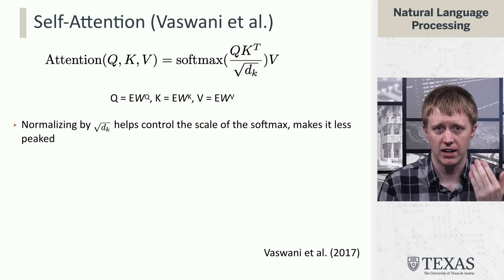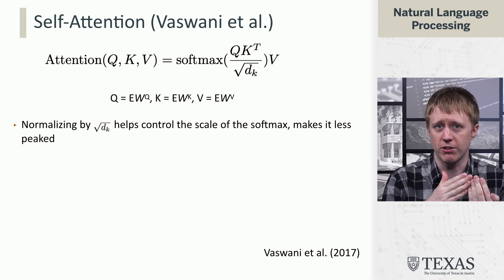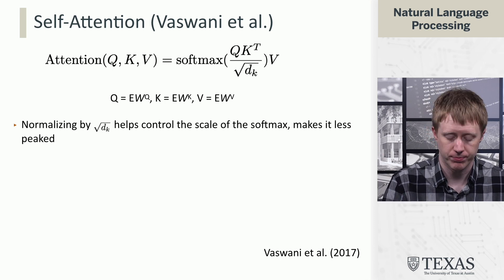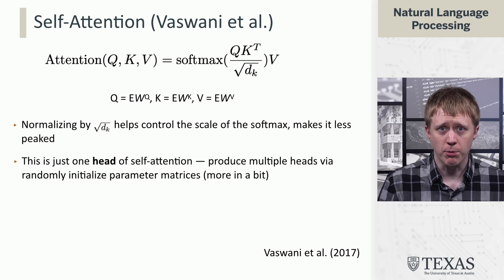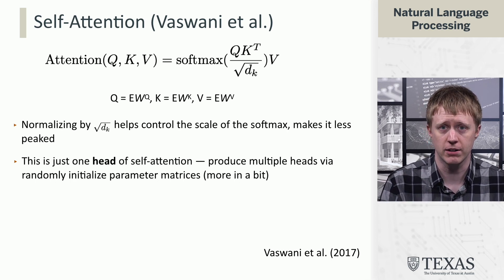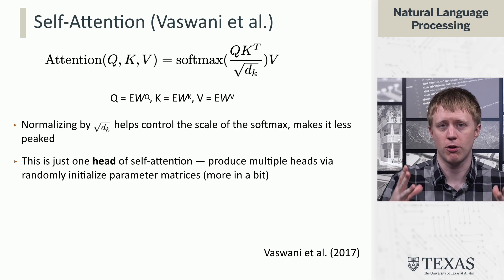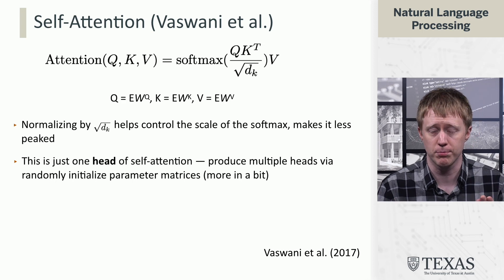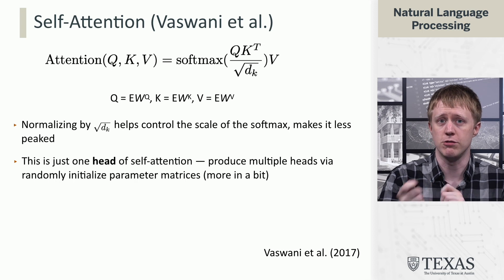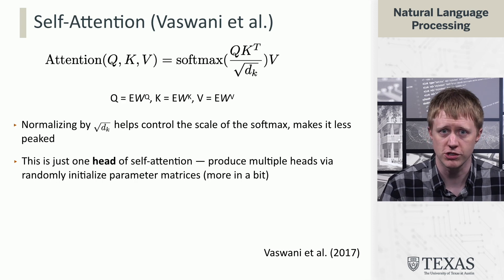Then they multiply by V here in order to get the output. They're taking their attention matrix A and multiplying that by V, so they're getting the output as a weighted combination of V. This is what we call one head of self-attention. We're going to talk about multi-head self-attention a little bit later. The key thing here is that this is parameterized by these matrices WQ, WK, and WV. As you change those matrices through learning, what this computation does changes as well.